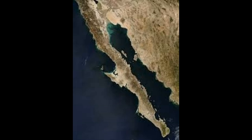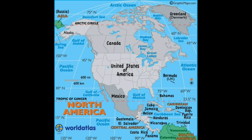Peninsulas, gulfs, and bays: North America has a mostly smooth coastline. A few peninsulas jut out from this smooth coastline. They are the Labrador, Nova Scotia, Florida, Baja California, and Yucatan peninsulas.